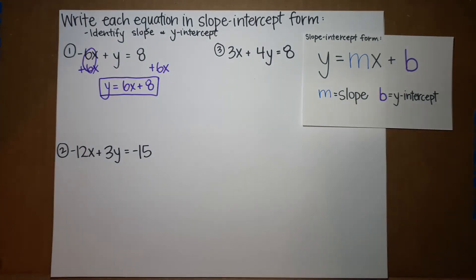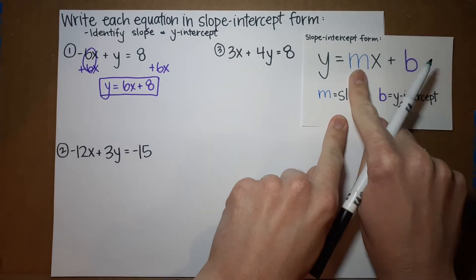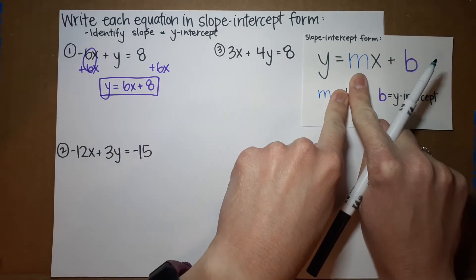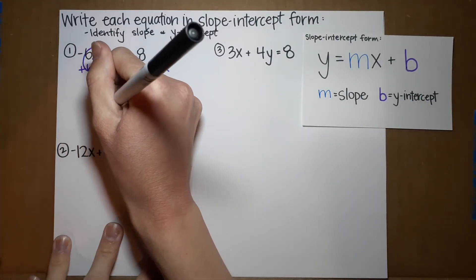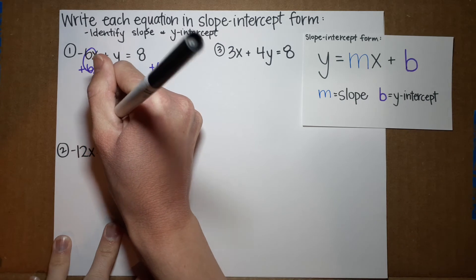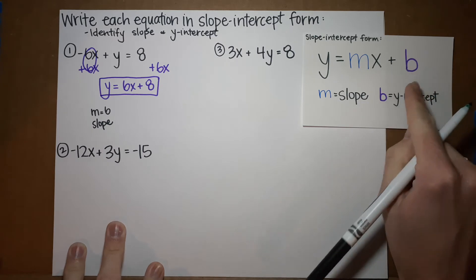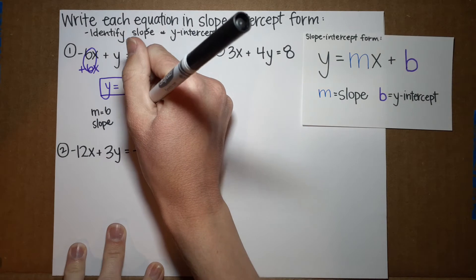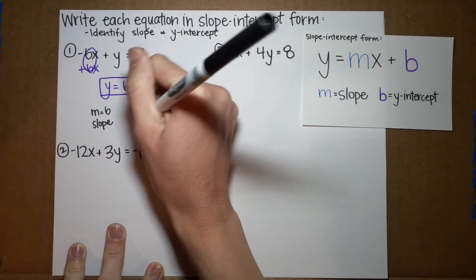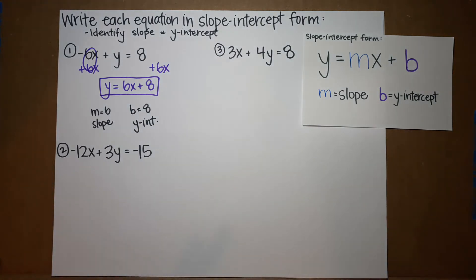Now, if you are being asked on your lovely worksheet that you love what the slope and y-intercept are, okay, slope is m. In this case, it's the number right in front of my x. It's a 6. So, m equals 6. That's my slope. If you don't know what that means yet, that's okay. We will get there. We are adding 8. Whatever's being added on the back is b, which is my y-intercept.